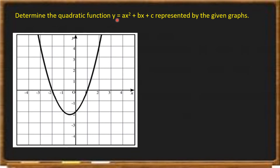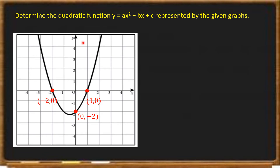So we will look for the coordinates of these three points, and those three points will be used to get the quadratic function. The coordinate of the first x-intercept is negative two comma zero. If you have an x-intercept, your y is zero. Another x-intercept is one comma zero — it is an x-intercept, so your y is zero and x is one. For the y-intercept, since x is zero, the value of y is negative two. So the coordinate is zero comma negative two.